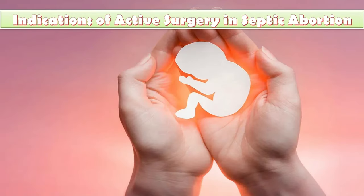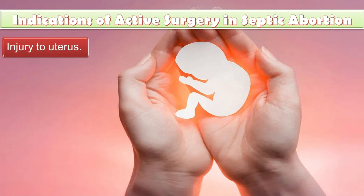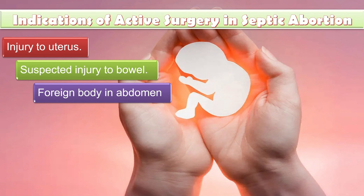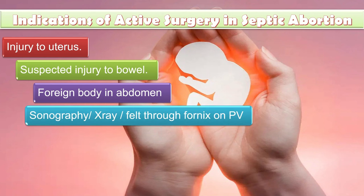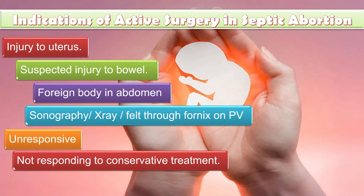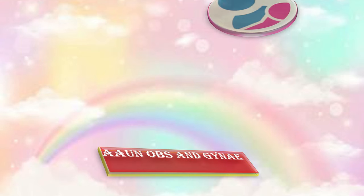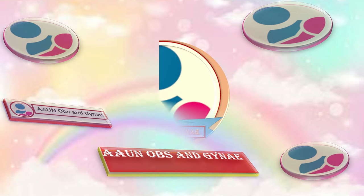Indications for active surgery include: injury to the uterus, suspected injury to the bowel, foreign body in the abdomen on sonography or X-ray, pelvic abscess felt through the fornix on PV examination or detected on sonography or X-ray, patient unresponsive to conservative management, or uterus too large to be safely evacuated per vaginam. Thank you — that was all about septic abortion. Subscribe to Obs and Gynae Al-Hafiz.